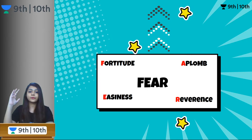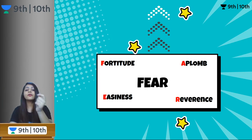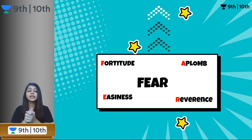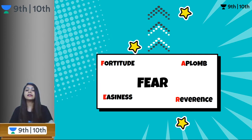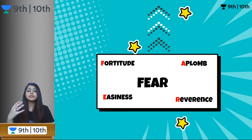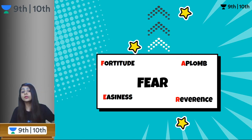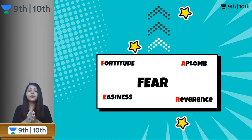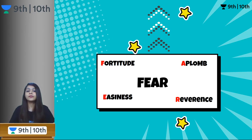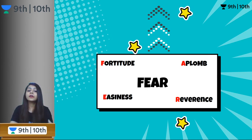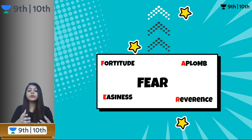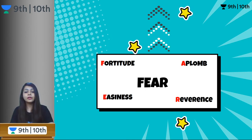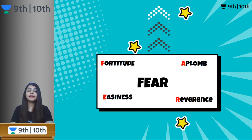Going away from FEAR — when you don't experience fear: F for fortitude, which means courage. E for easiness, meaning relaxation — when you are not fearful, you will definitely feel relaxation. A for aplomb — aplomb is assurance. When you are certain about a situation, you do not feel fearful. R for reverence — reverence means the deep respect that you have. When you are not fearful for a person, it is only respect that you have.